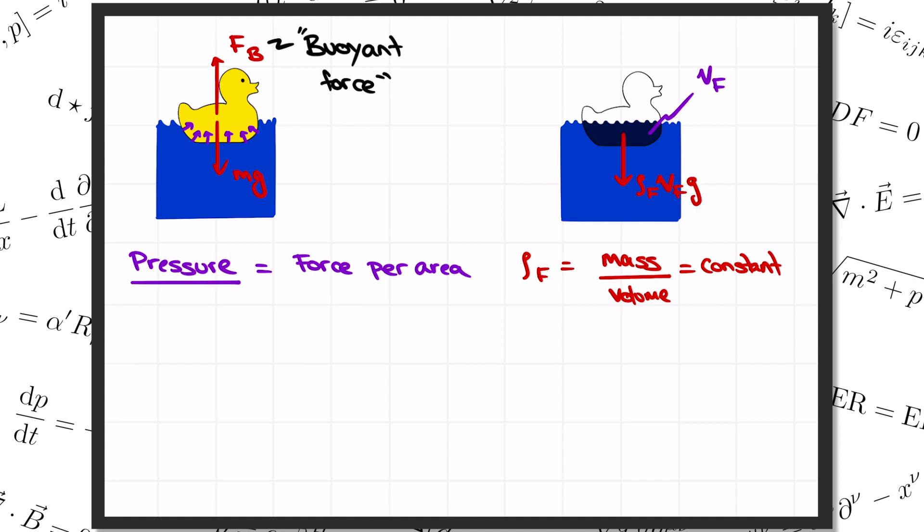The fluid is at rest. So this weight of the highlighted region pulling down has to be counteracted once again by all the little pressure forces from the rest of the fluid pushing on it. So all these little pressure forces have to add up to the total weight of the dark blue region of fluid, rho Vg.